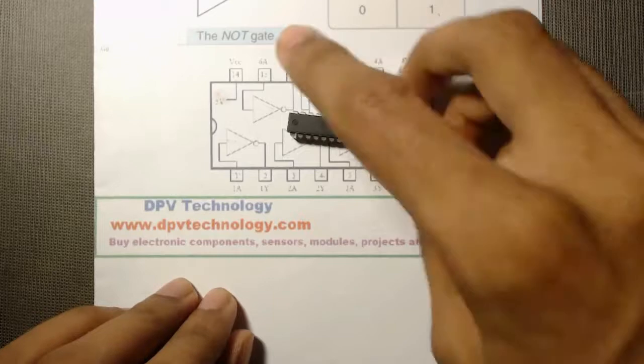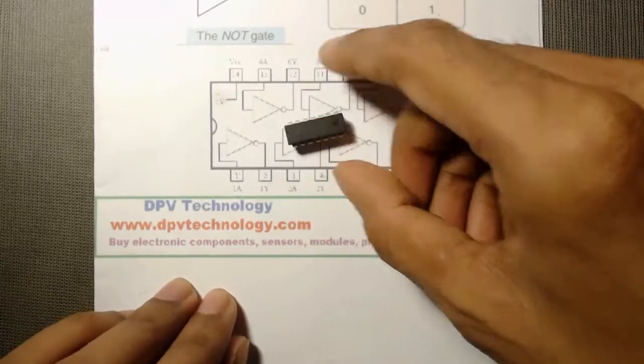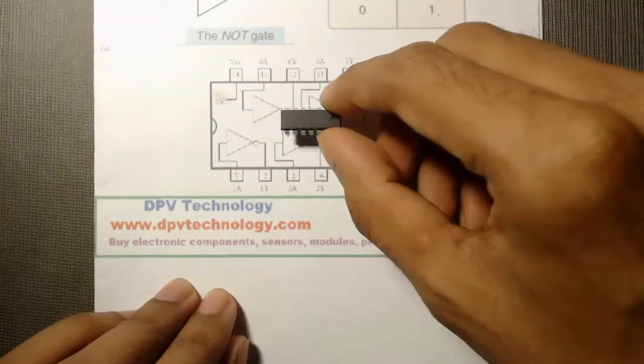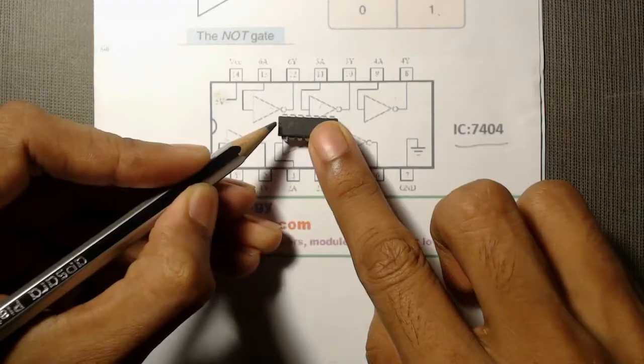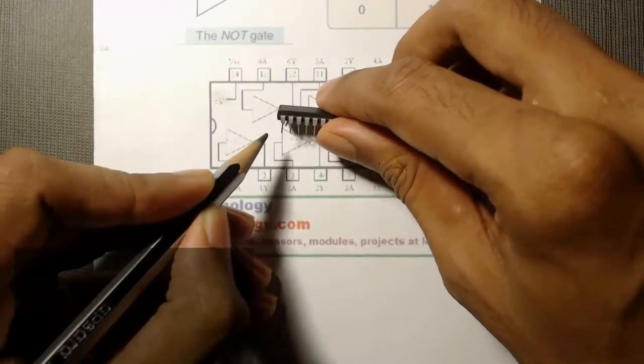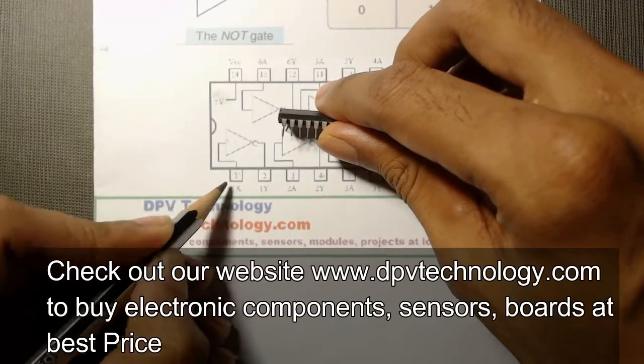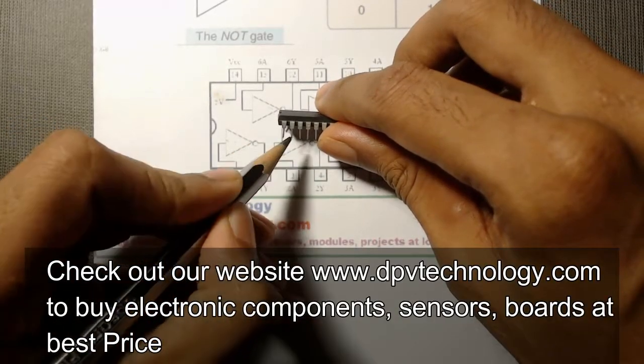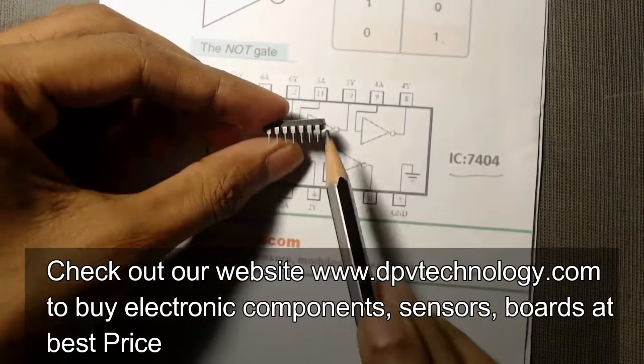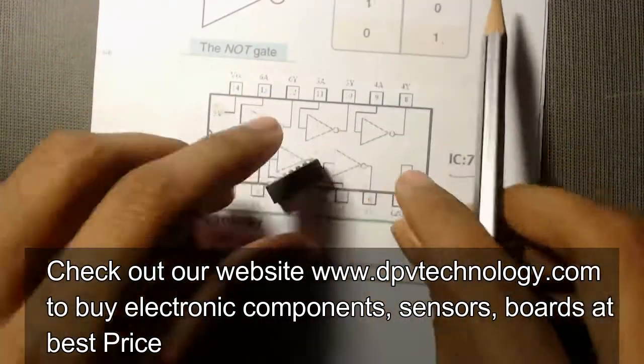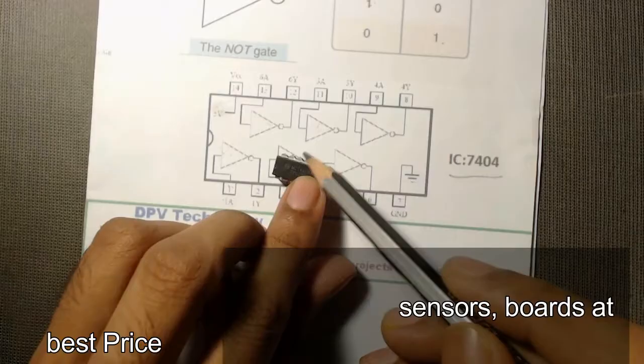This is a 7404 NOT gate IC. When we keep this IC like this, you can see there is a cut mark. By keeping this cut mark to the left side, then the first pin becomes pin number 1. Then this is pin 1, then second is 2, and this one 7, then 8, 9, 10 up to 14.